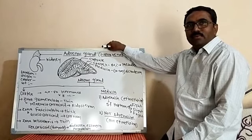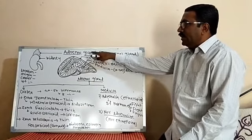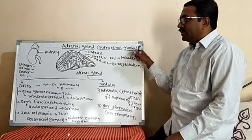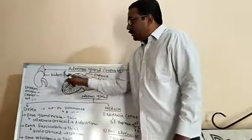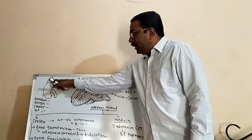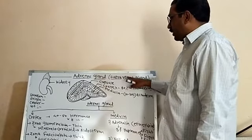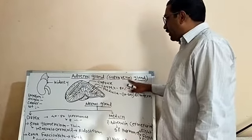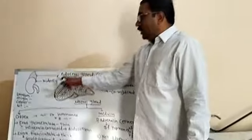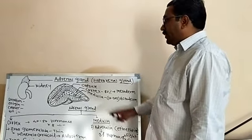Good evening. Today we study the next endocrine gland — the adrenal gland. The adrenal gland is also called as the suprarenal gland. It is called suprarenal because it is present at the superior or anterior position of the kidney, like a cap-like structure sitting on top of the kidney.